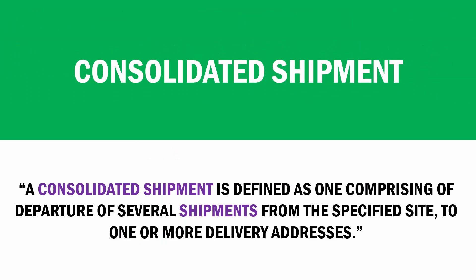It is possible to initiate a consolidated shipment and manually connect multiple individual shipments to it. A consolidated shipment represents a departure — for example, a truck — of several shipment IDs from your site to all the different delivery addresses of the connected shipments. All activities in the shipment process can be executed from the consolidated shipment. When executed from the consolidated shipment, activities that prepare the shipments for loading are sorted in load sequence order, while activities related to unloading are sorted in reverse load sequence order, for example the sorting of delivery notes.